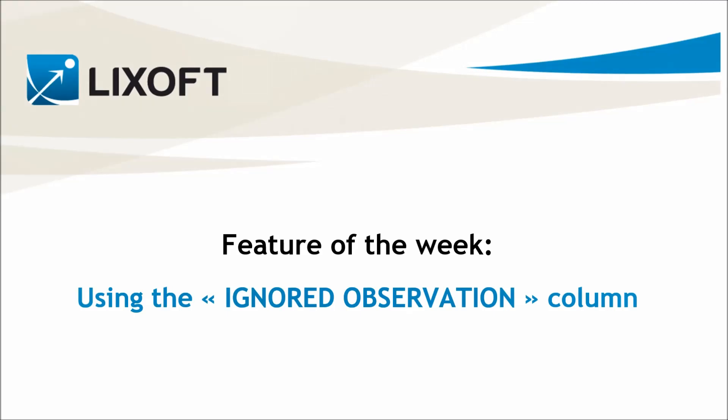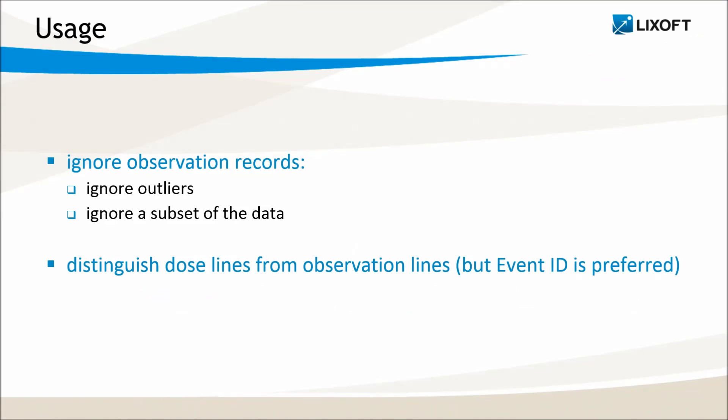Today I'm going to explain to you how to best use the ignored observation column. The principal goal of the ignored observation column is to ignore some observation records. This can be the case when there are outliers, for instance, or when we want to ignore all records of a subset of the data.